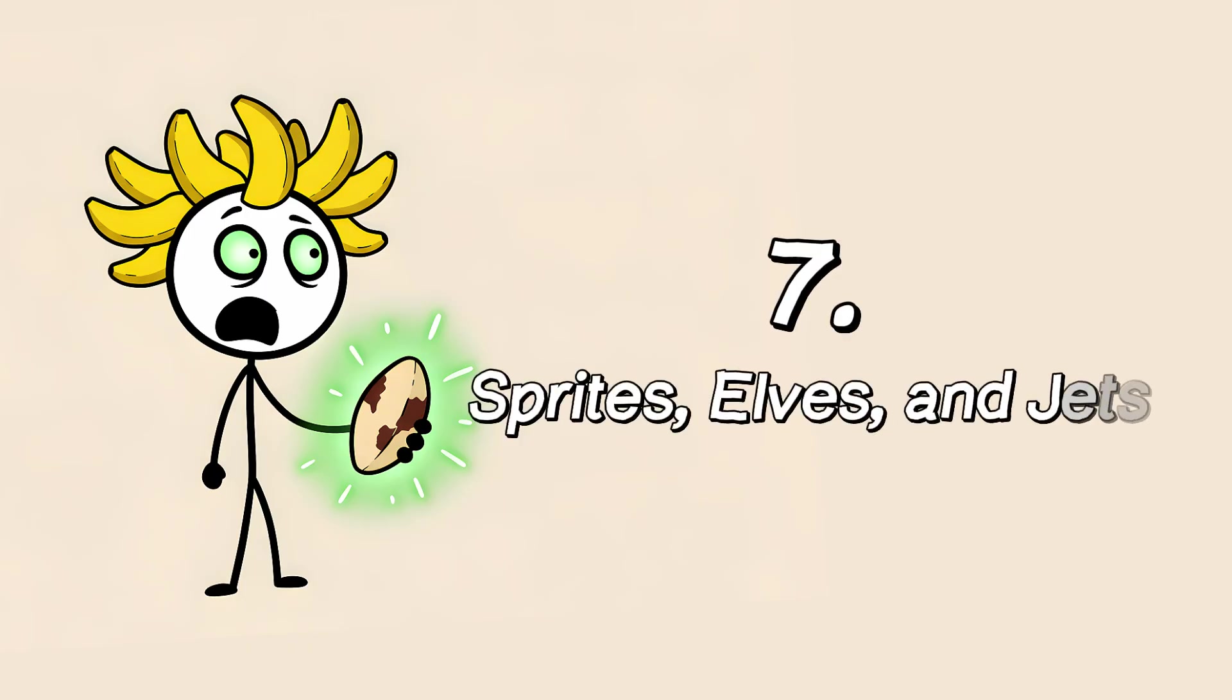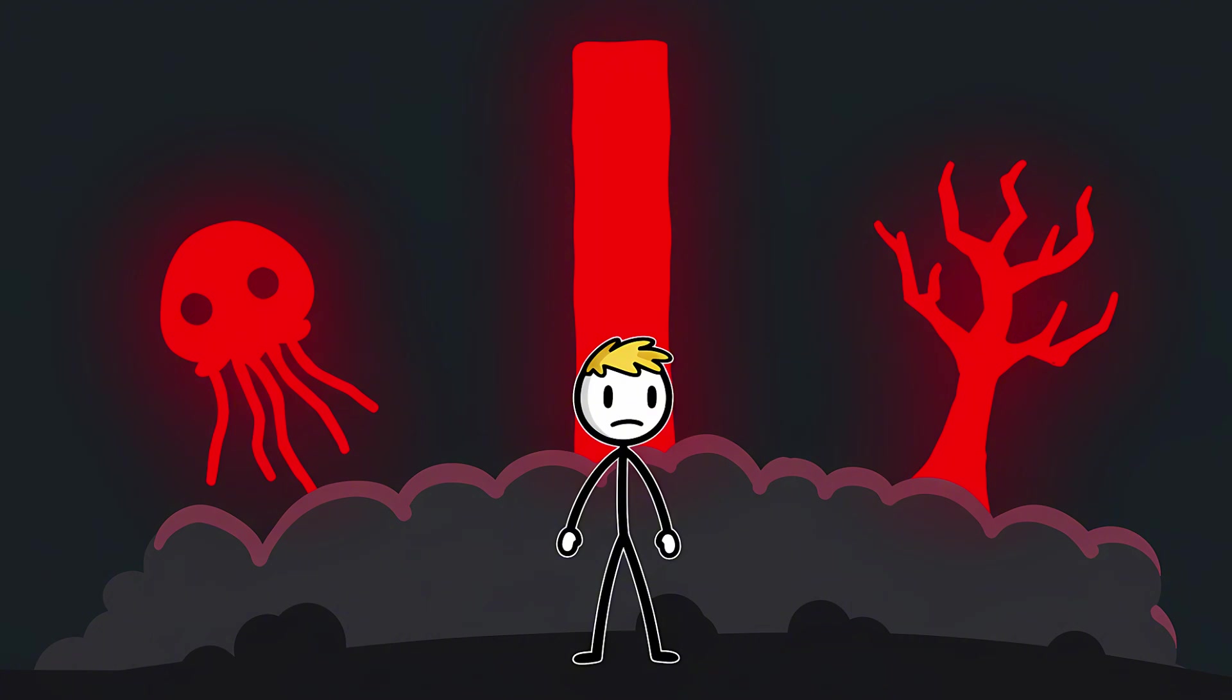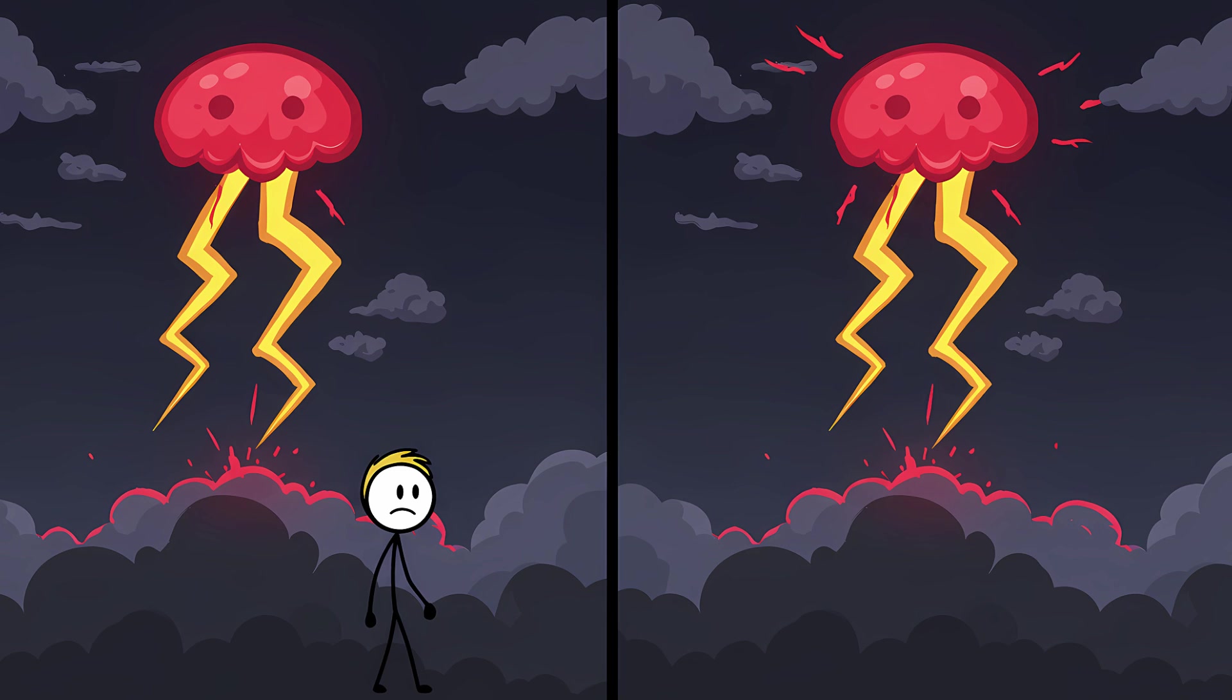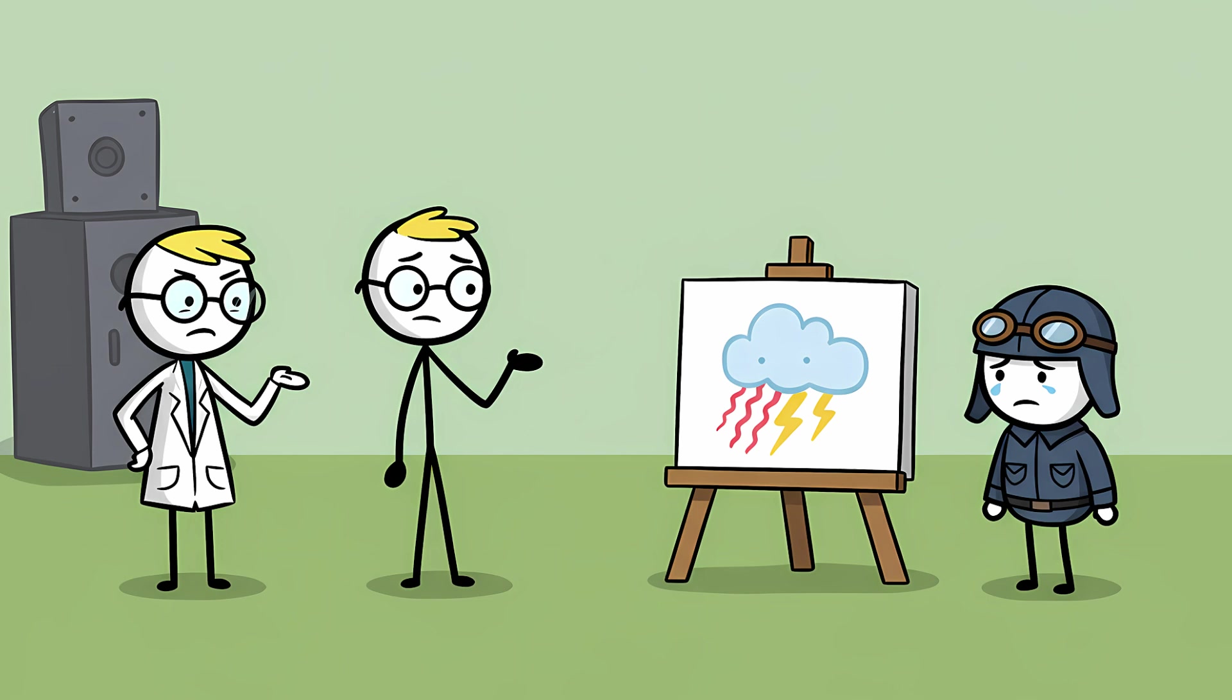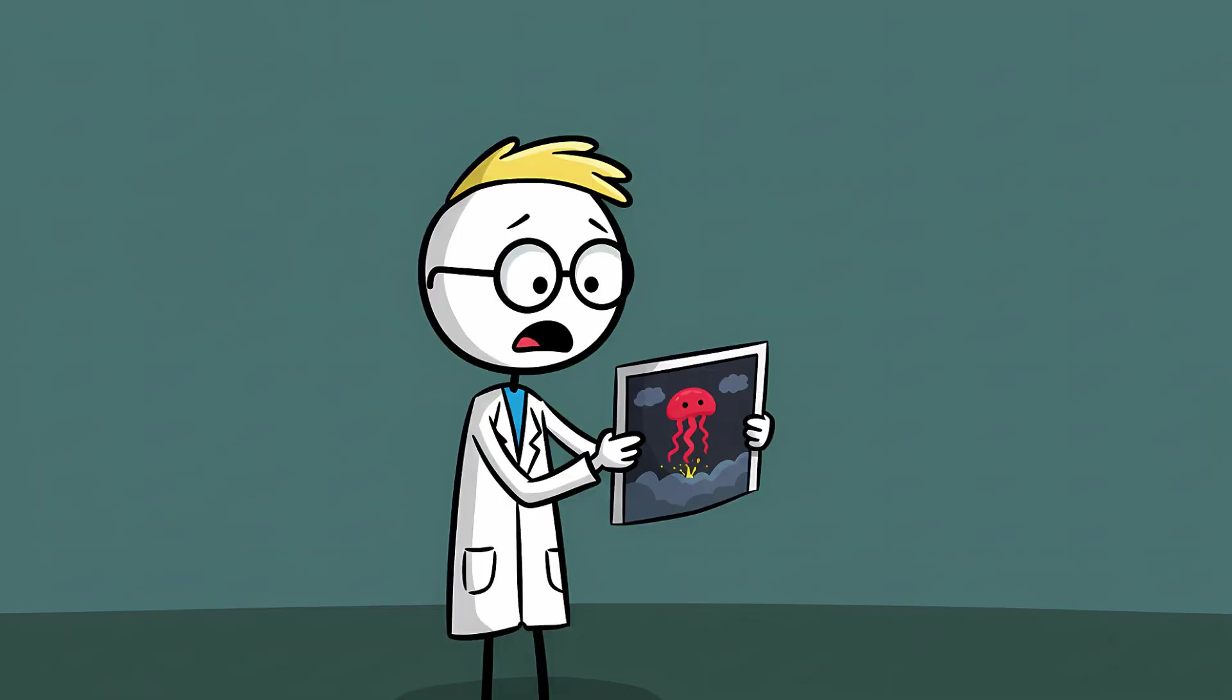Number seven. Sprites, elves, and jets. For a long time, airline pilots would occasionally report seeing something impossible. Colossal, fleeting flashes of red or blue light erupting from the tops of thunderstorms, reaching up towards the edge of space. They looked like giant jellyfish, columns, or demonic trees made of lightning. But these sightings were happening at altitudes where lightning wasn't supposed to exist, and they were gone in a millisecond. For decades, the scientific community dismissed these as optical illusions or pilot fatigue. The sky doesn't do that. Then, in 1989, someone accidentally caught one on camera. And suddenly, these mythical creatures were real.